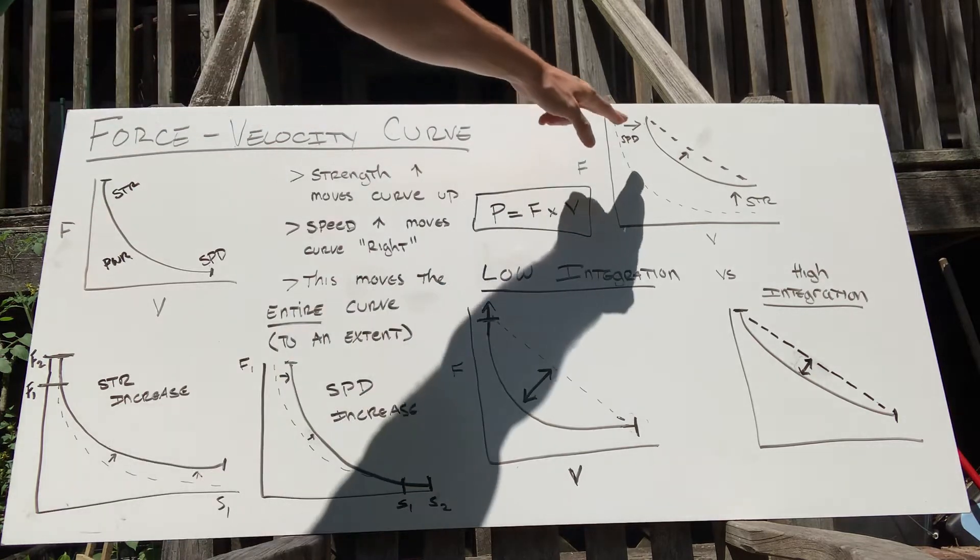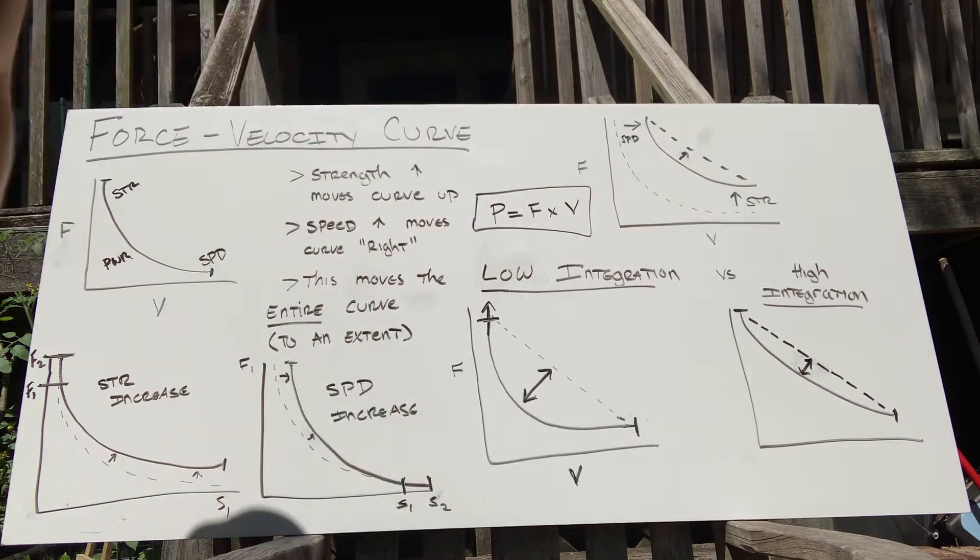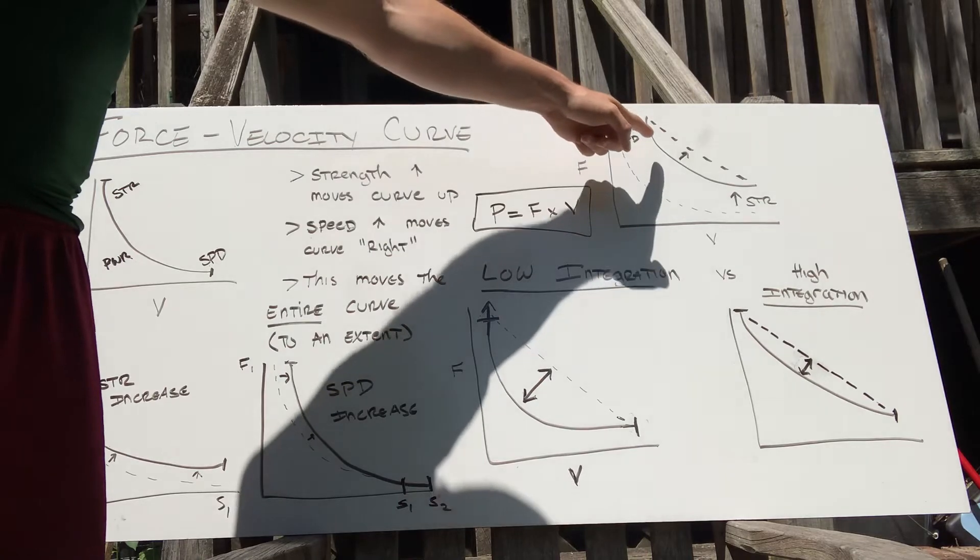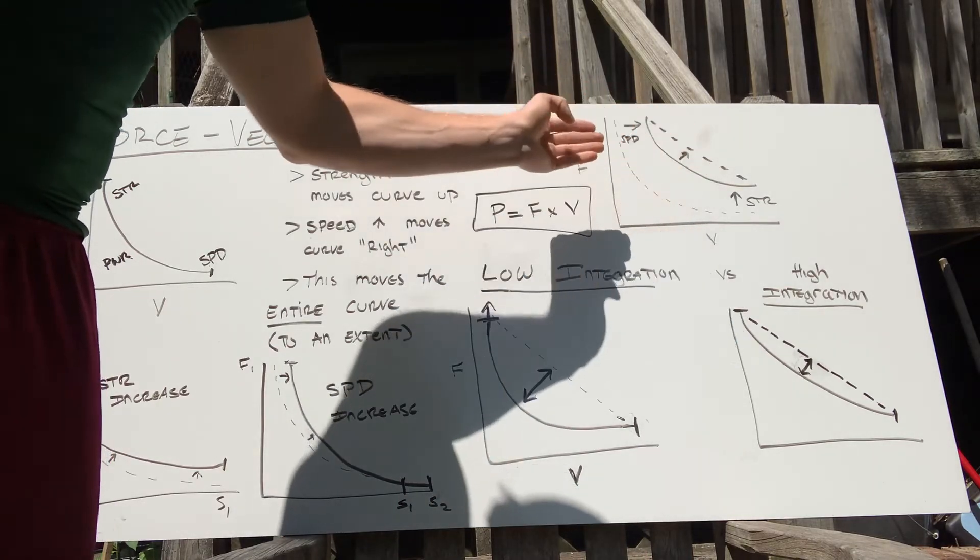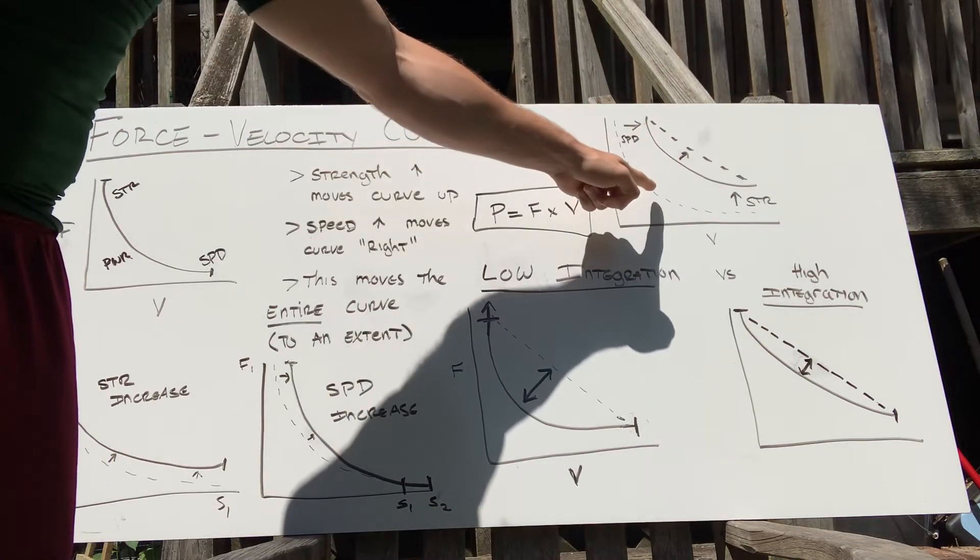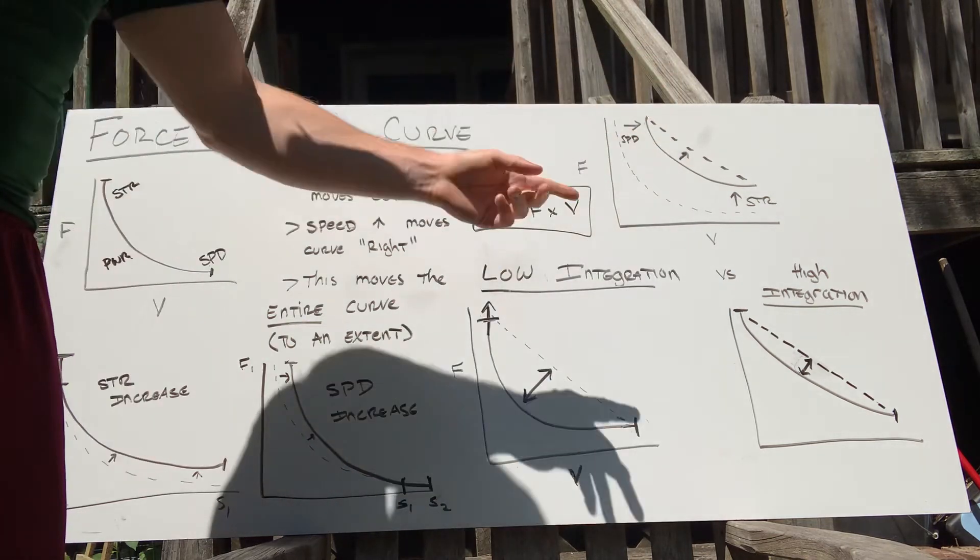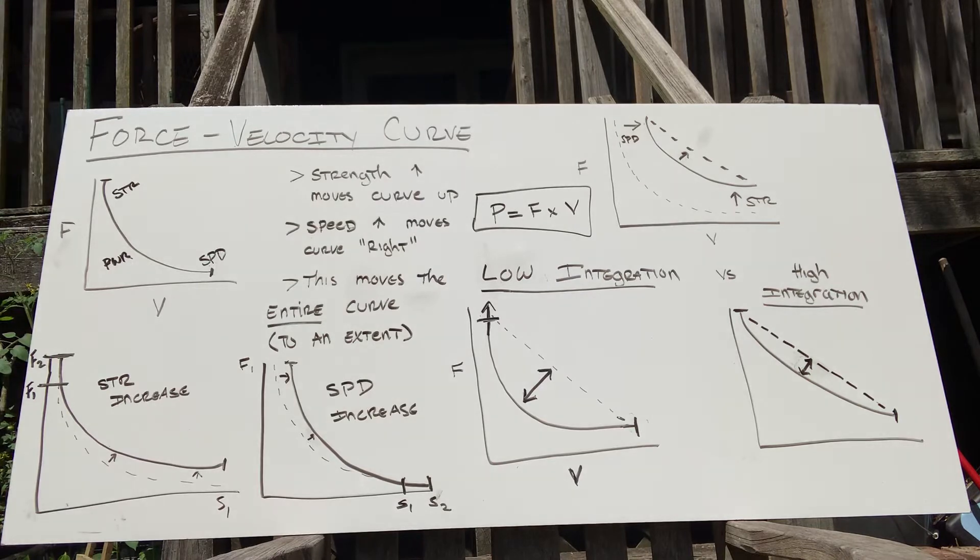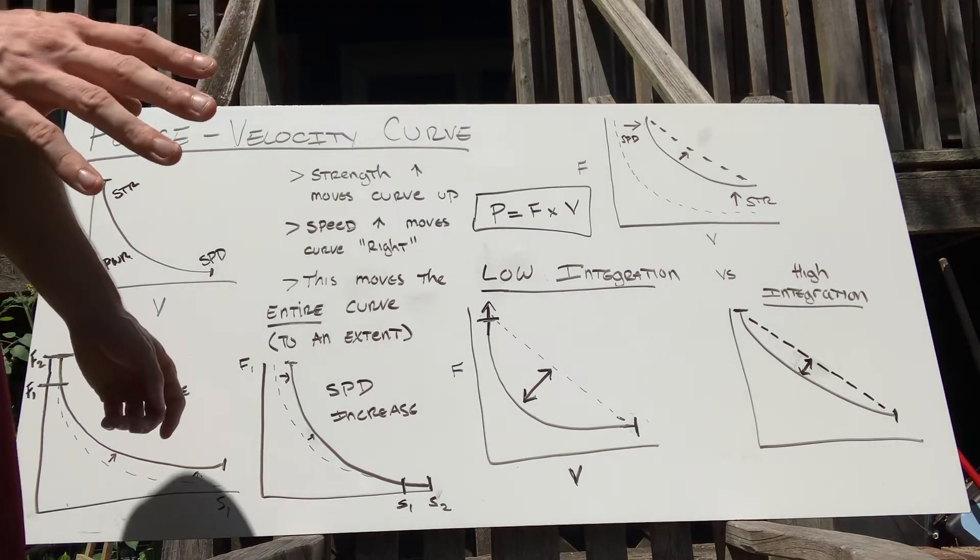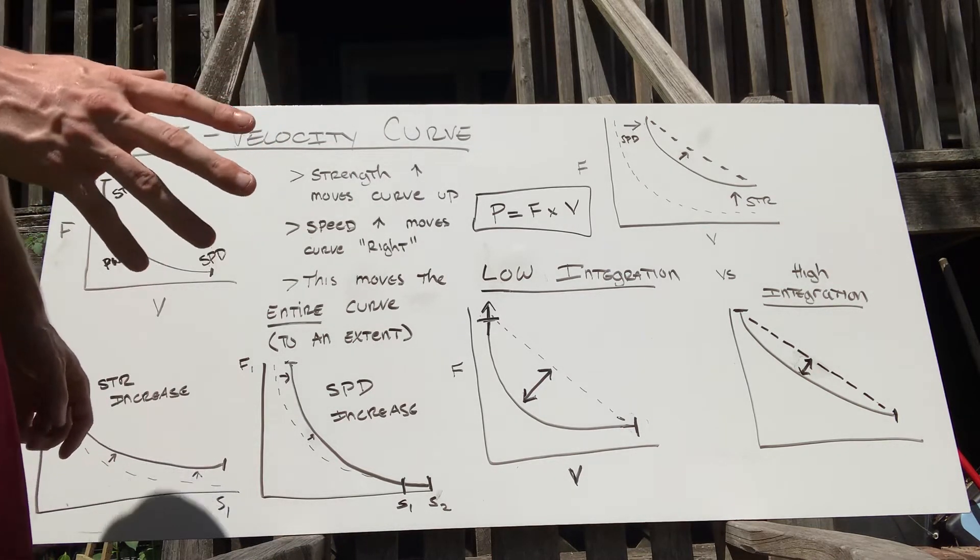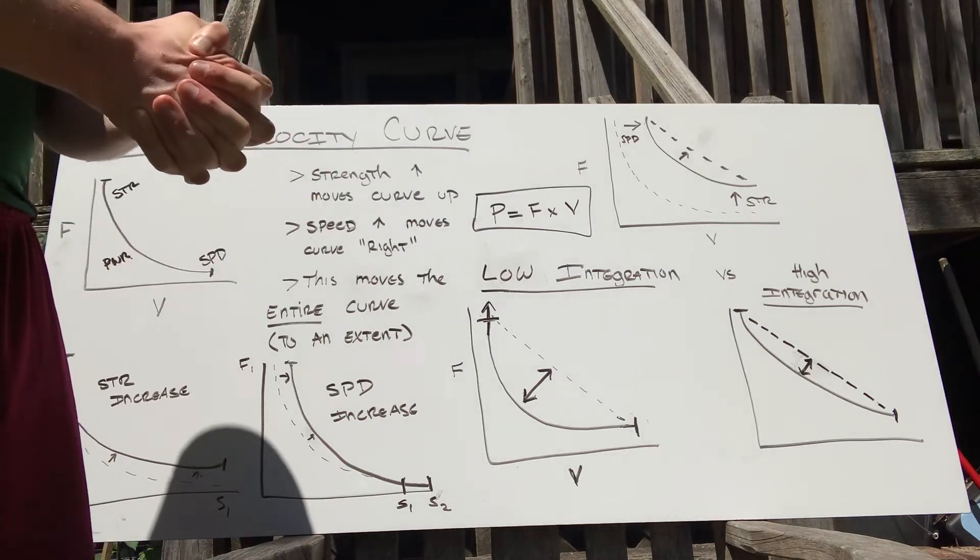Simply by training, speed increases move it to the right and strength increases move it up. So when you look up here, this curve has been pushed both up and to the right, which means power in the middle when you're moving fast and strong is now way up here. The only time power exercises really become important is when you're trying to integrate strength and speed.